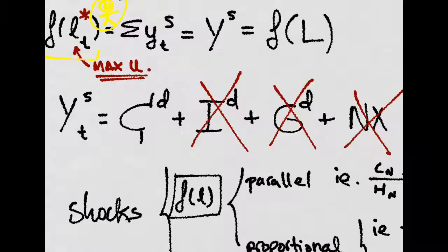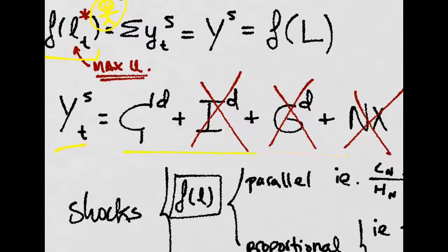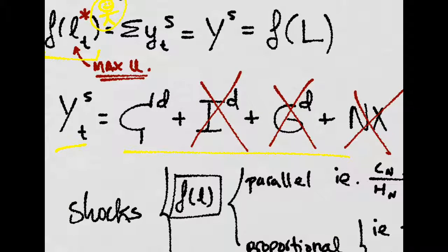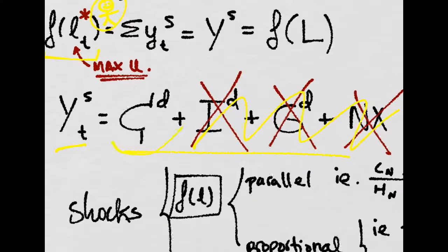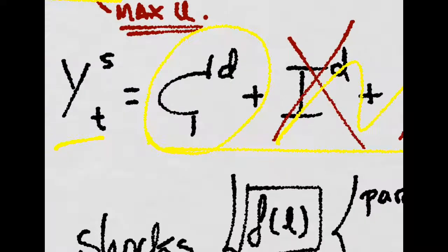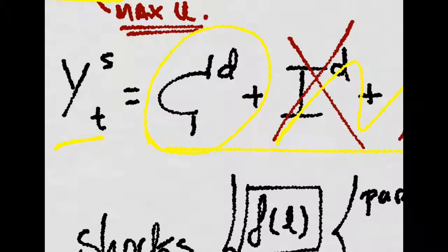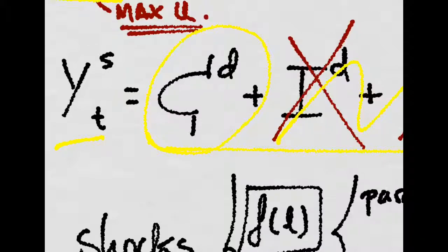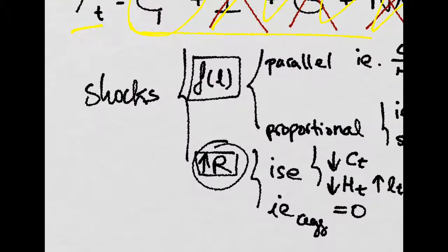Remember, in equilibrium, aggregate supply is equal to aggregate demand. In this case, we don't have anything else but consumption demand. So, on aggregate, production equals consumption.